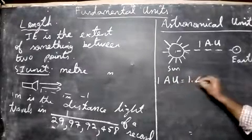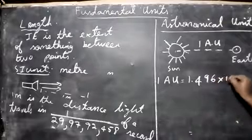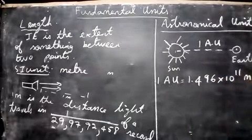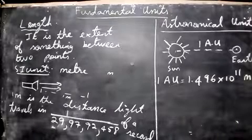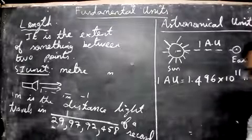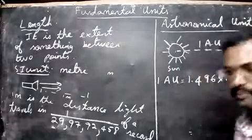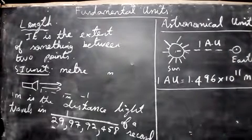If you see the value for one astronomical unit, it comes to be 1.496 into 10 power 11 meters. That's plus 11, it's a very big number. So that's called as one astronomical unit.